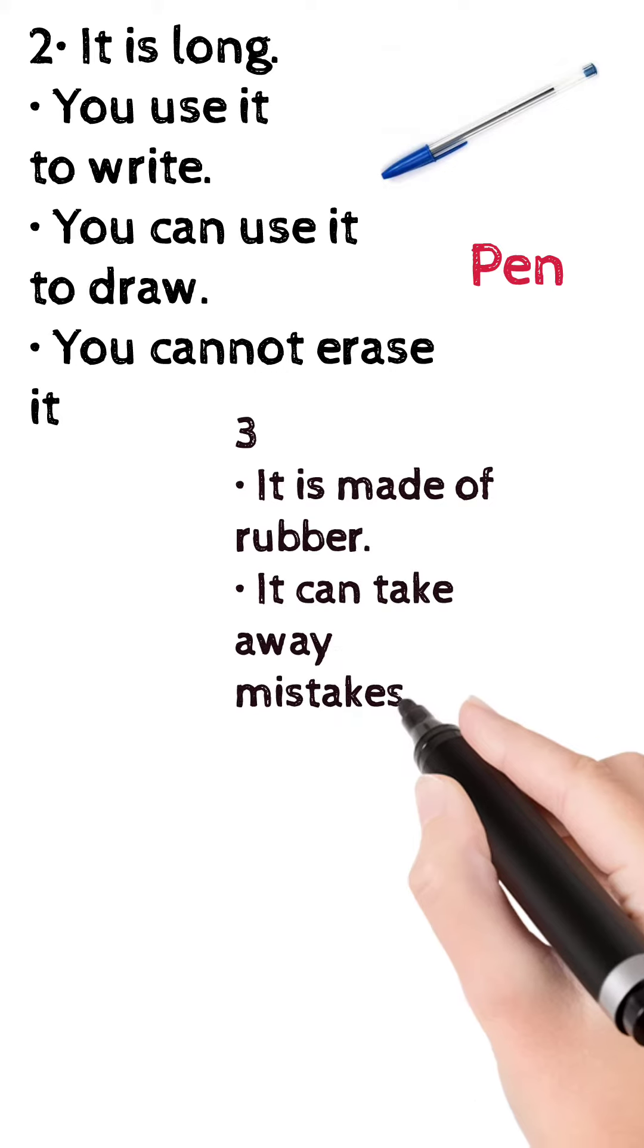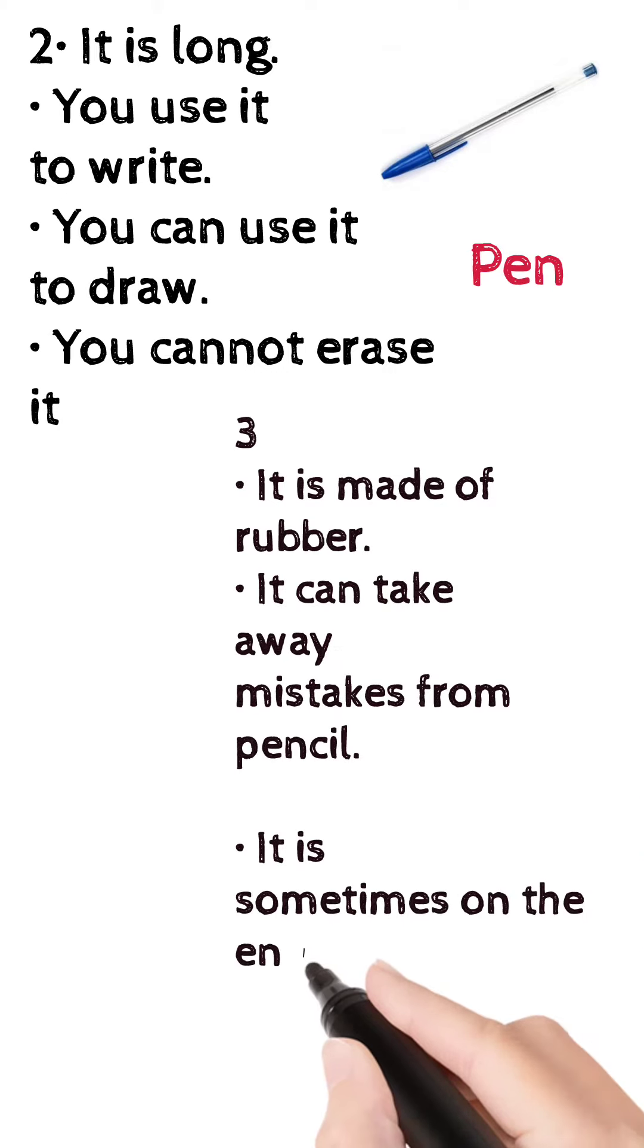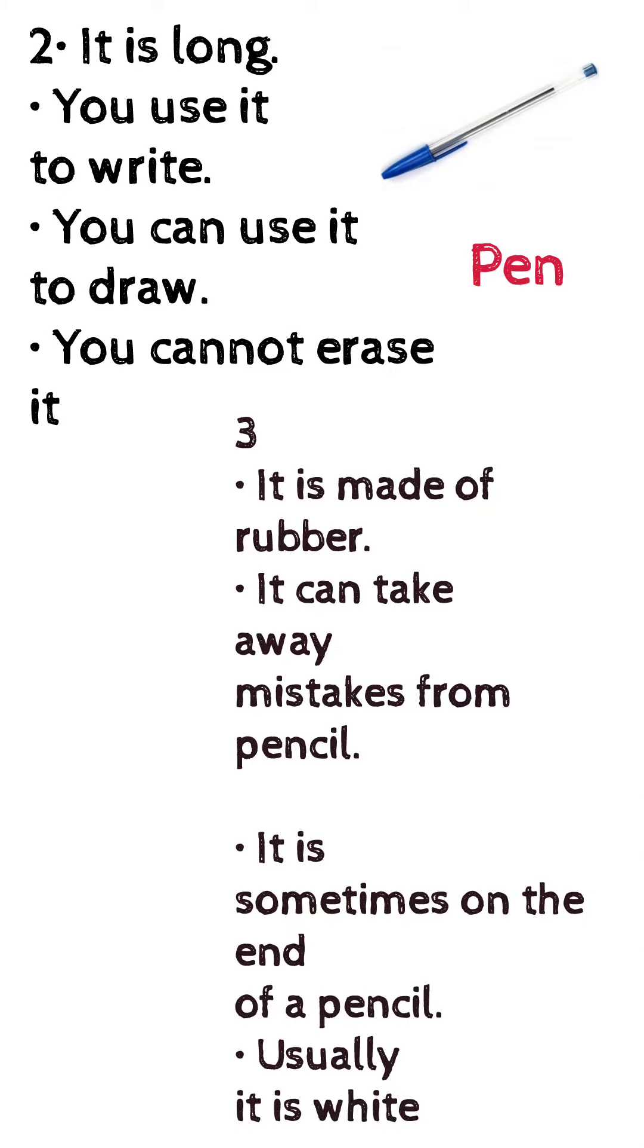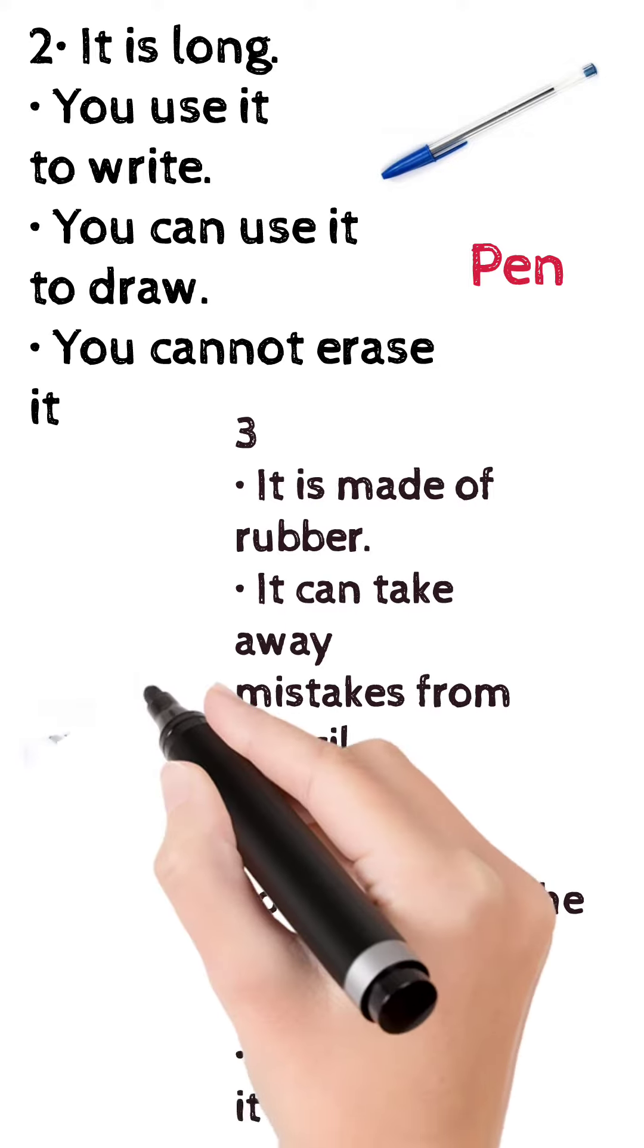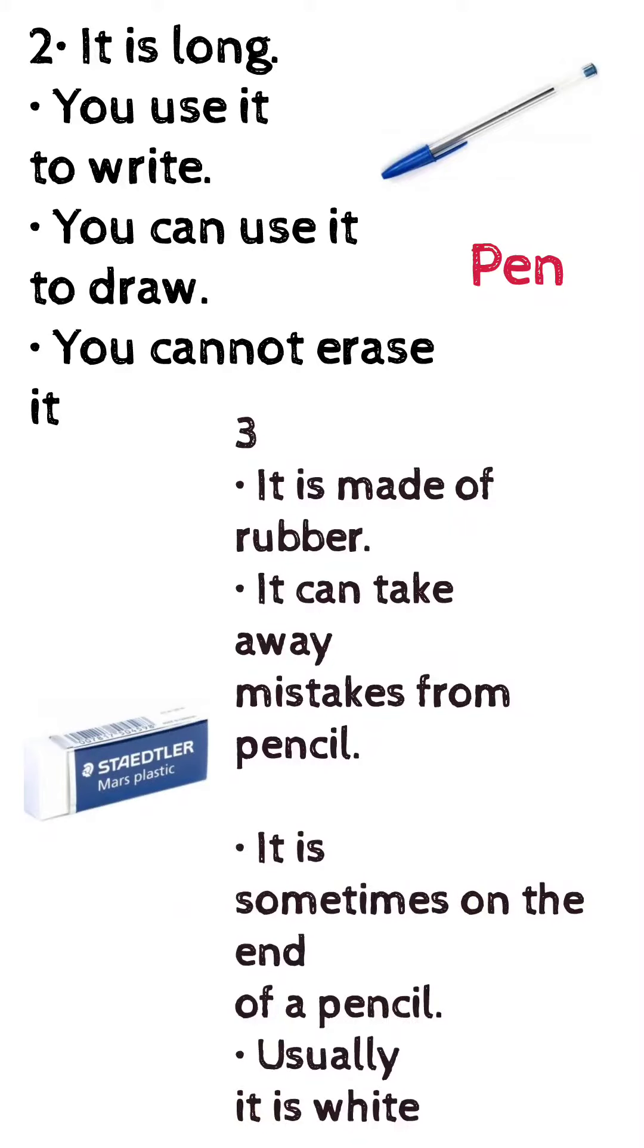Third one. It is made up of rubber. It can take away mistakes from pencil. It is sometimes on the end of a pencil. Usually it is white. What is it? Yes, it is an eraser.